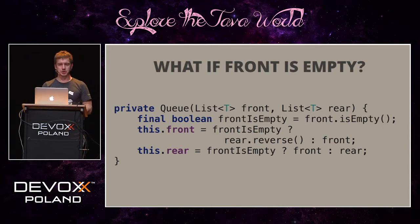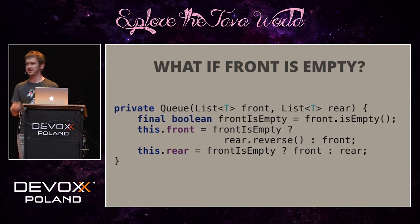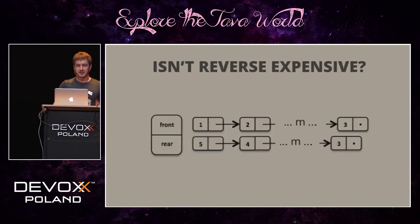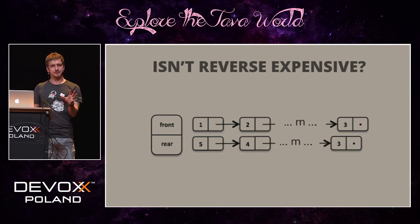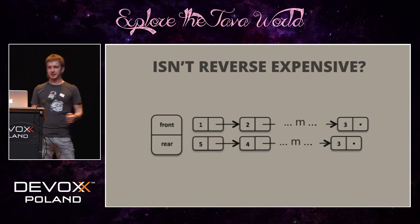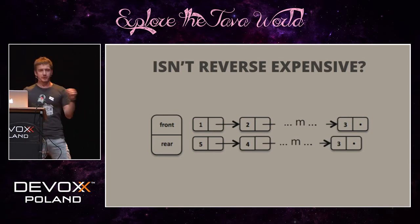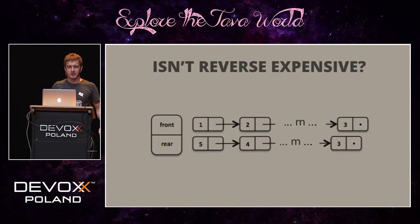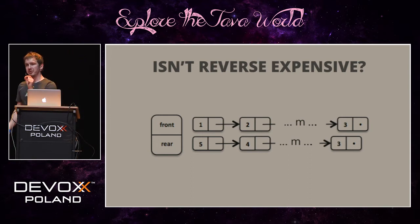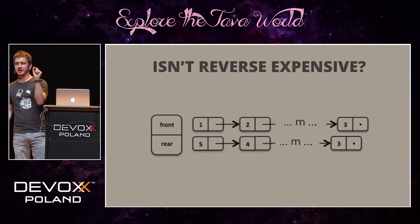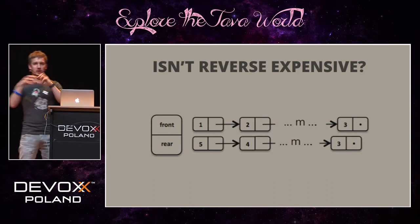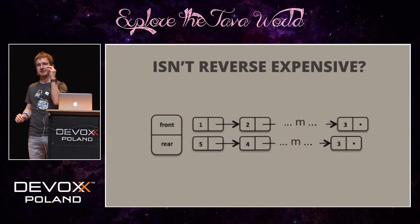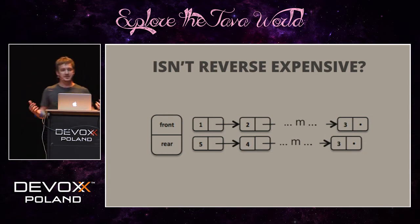The reverse operation is expensive — linear — so can dequeuing still be performant? Consider a queue with m elements in front and m in the rear. Reversing the rear costs O(m) operations. But to reach the point where the front is empty, we must have executed at least m dequeues. So we spend O(m) on a reverse only after m cheap constant-time dequeues — meaning the amortized complexity of dequeuing is still constant time.